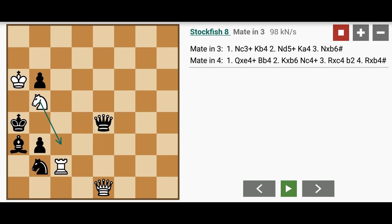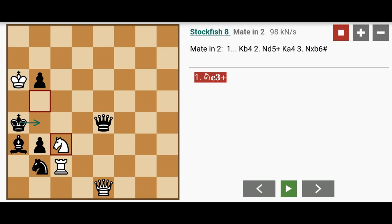White plays knight to c3. This is a check. Black has only one move. King to b4.